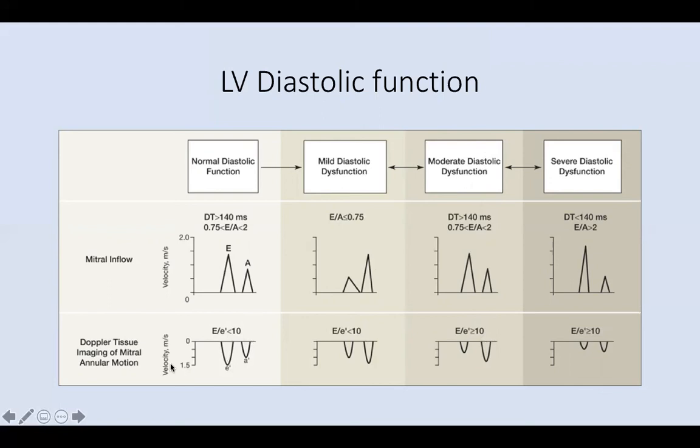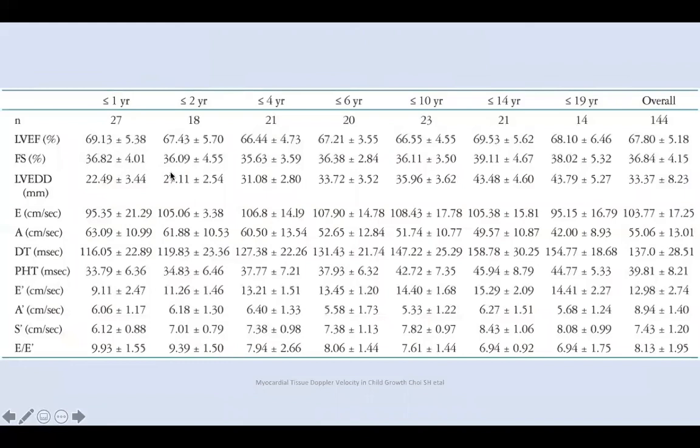In pediatrics, remember the value 10: less than 10 is normal, greater than or equal to 10 is abnormal. According to one reference, normal values were calculated by age: for less than two years, the value is 9.93 plus or minus 1.55. As the child gets older, this number becomes slightly lower.